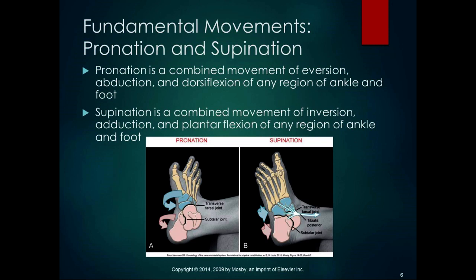Pronation and supination happen naturally during the gait cycle. As we land on the heel, we perform eversion, abduction, and dorsiflexion, rotating in toward the big toe so the weight is directed toward the first metatarsal, and then we push off that first metatarsal. Overpronating is where pronation happens too fast and collapses the arch, and we'll talk about that more in the functional aspects.